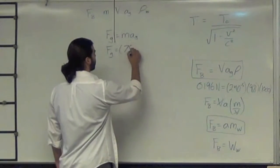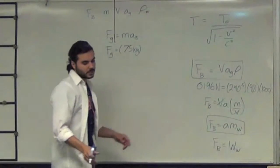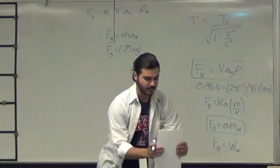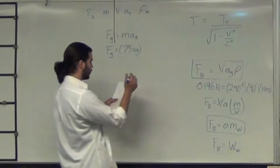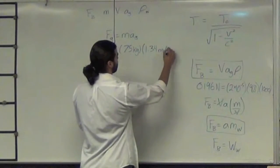We need this to be in kilograms, so 75, and then the acceleration due to gravity on Titan is 1.34 meters per second squared.